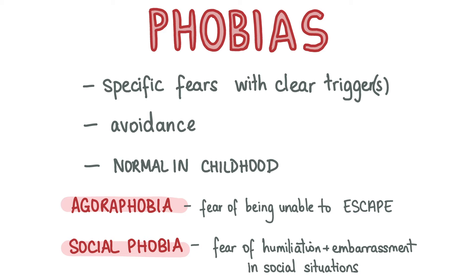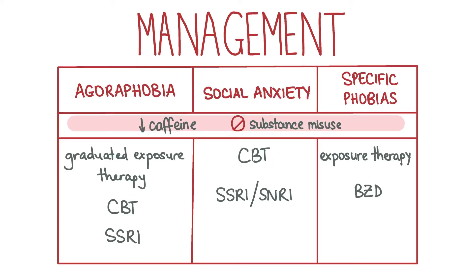Specific phobias are often caused by a conditioning event in childhood. They are characterised by marked fear and avoidance of a specific situation or object which the patient recognises as excessive. Specific phobias are managed conservatively by avoiding anxiety-inducing substances like caffeine, supporting the patient to stop misusing substances if applicable, and treating comorbid psychiatric disorders. They are also managed with exposure therapy, and short-term courses of benzodiazepines can be given if symptoms are very severe or as a one-off, for example before a flight for those who have pathological fears of flying.